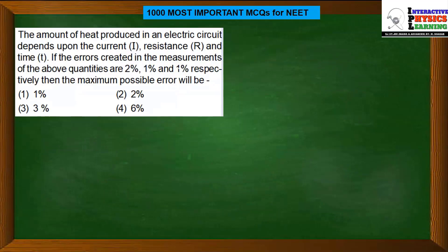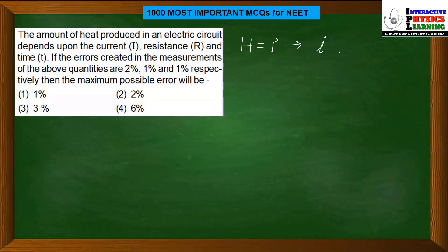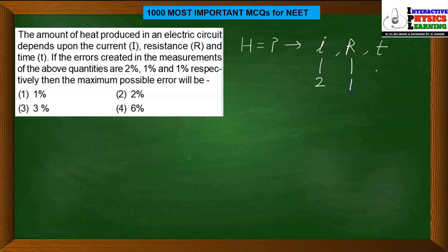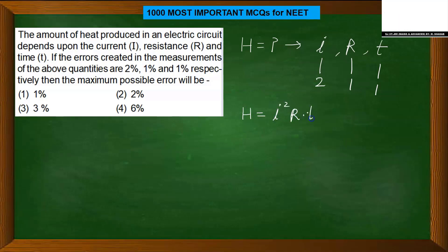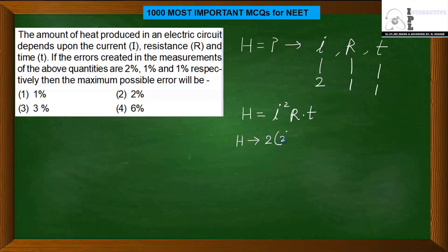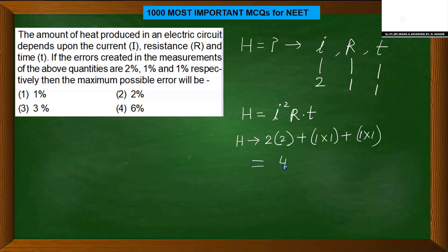Next question: the amount of heat produced in an electric circuit depends on current I, resistance R, and time T. Errors given: 2% in I, 1% in R, 1% in T. The formula for heat is H = I²RT. When finding percentage error, each error is multiplied by its power. So: 2 × 2% (for I²) + 1 × 1% (for R) + 1 × 1% (for T) = 4 + 1 + 1 = 6%. The answer is 6%.